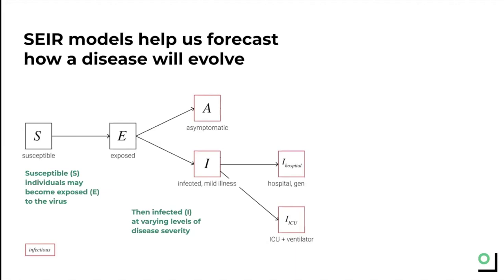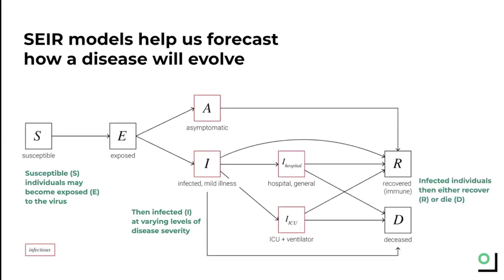The reason it's important to make this distinction between the different levels is because the resources needed to treat someone with a very severe case are very different from those needed to treat someone who doesn't have any symptoms. Breaking it down in this way can help policymakers and healthcare workers understand what the resource needs might be in the future. Finally, infected individuals could recover as many do, or unfortunately some pass away. All in all, an SEIR model tries to capture how people move through these different stages and uses this framework to paint a picture of what the future might look like.